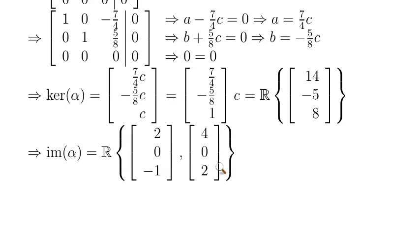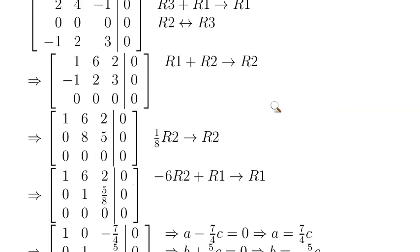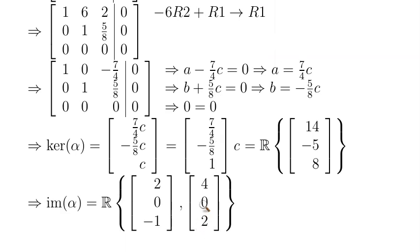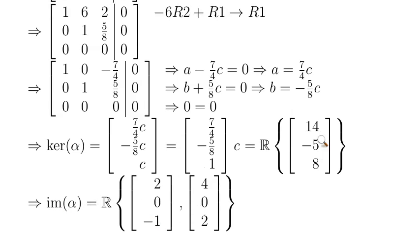In this case, the image is two-dimensional and the kernel is one-dimensional, which makes sense — this is a 3x3 matrix going from R3 to R3, so the dimensions must add up to 3. That's how you find the basis for the kernel and the basis for the image of a linear transformation using row reduction.